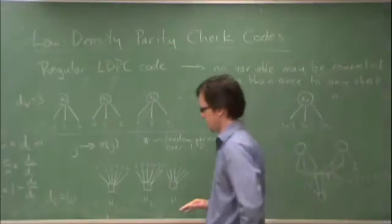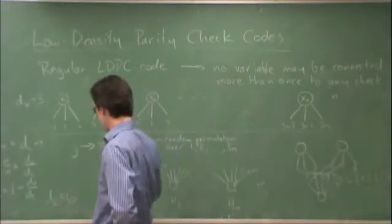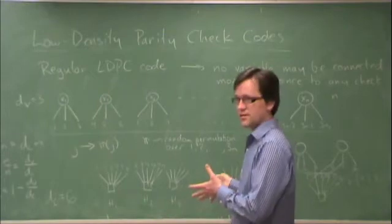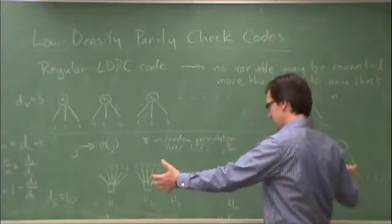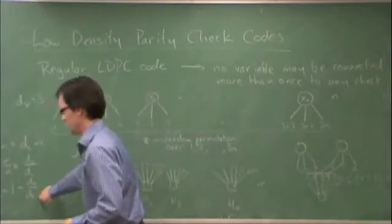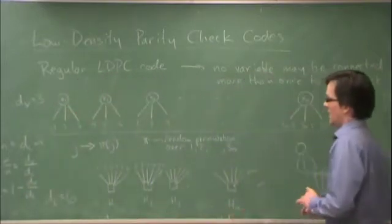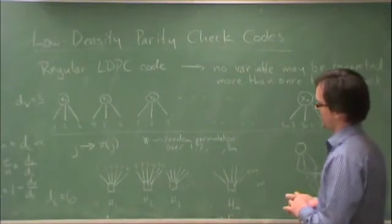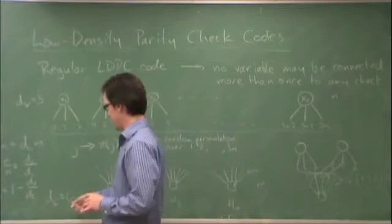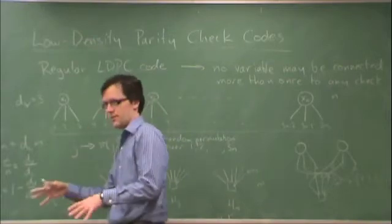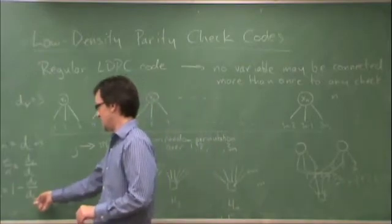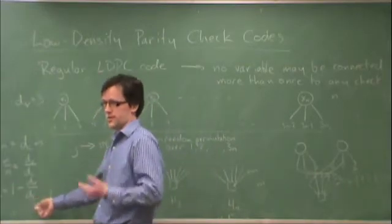It's a quarter, so if dv is 3 and dc is 4, what that means is there are far more parity checks, because there are fewer edges on the bottom, so 1 minus 3 over 4 is a quarter. In fact, it turns out that the power of the code is related to dc — as dc goes up, the code becomes less powerful, but that makes sense because the rate is also going up.